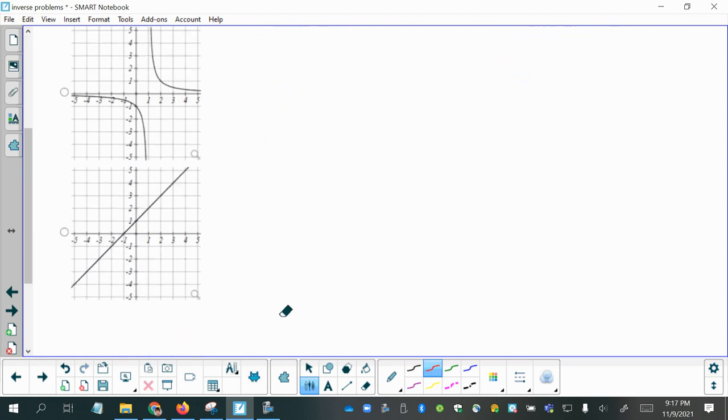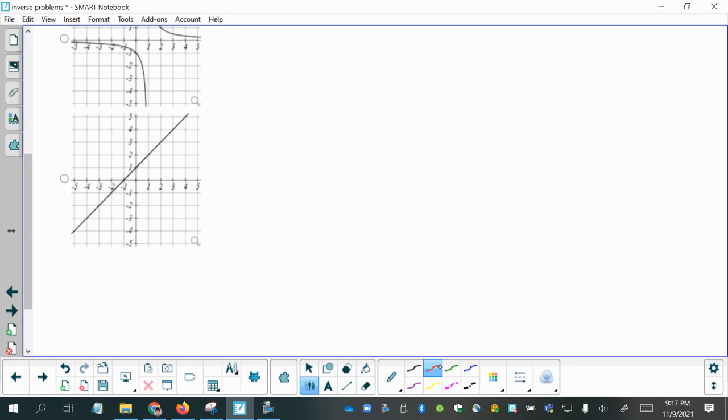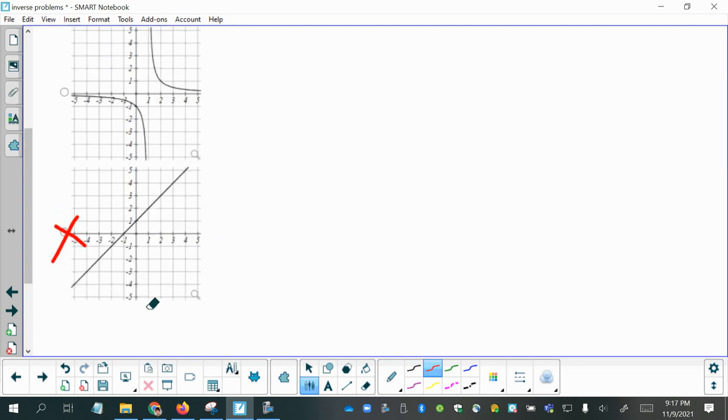By the way, I didn't say that I would eliminate this because it doesn't have asymptotic behavior. And because we know that lines, or at least we should know by now probably, that linear functions, this is a line, so it's a linear function,